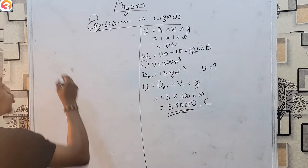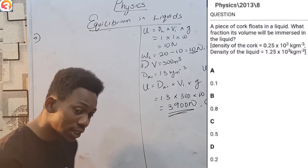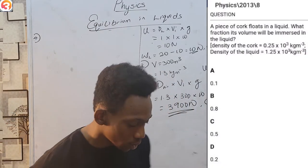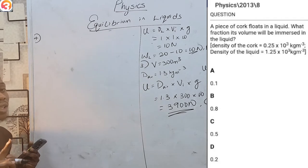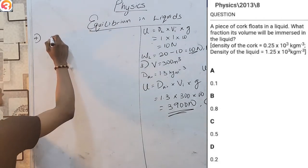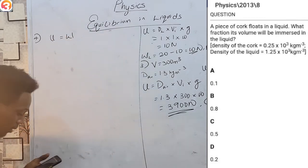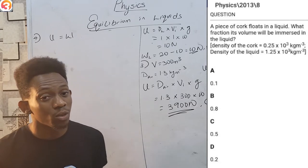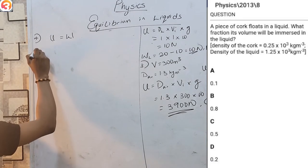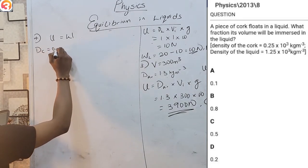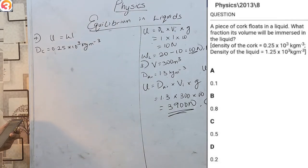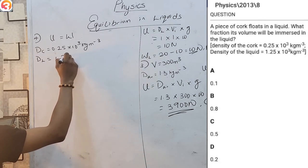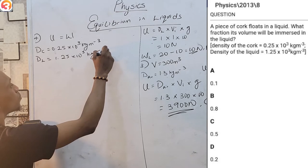Our fourth question comes from 2013, number 8. A piece of cork floats in a liquid. What fraction of its volume will be immersed? The density of the cork is 0.25 × 10³ kg/m³ and the density of the liquid is 1.25 × 10³ kg/m³. We know it is floating — and by the principle of flotation, the upthrust must equal the weight.